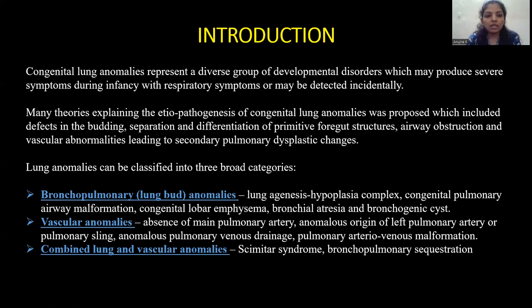Lung anomalies can be classified into three broad categories. First, bronchopulmonary or lung bud anomalies, including lung agenesis, hypoplasia complex, congenital pulmonary airway malformation, congenital lobar emphysema, bronchial atresia, and bronchogenic cyst.